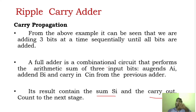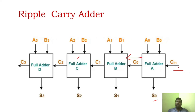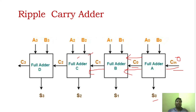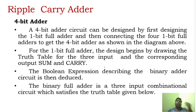This is how the ripple carry adder works. The bits produce the output based upon the input you are giving, and based upon the carry input it produces the carry out — the sum and carry. Only if you give the carry input does it produce the carry output. If the addition produces a carry, it will ripple through to the next bit. Each carry is carried out to the next particular adder. One important thing: this full adder will work only after receiving the carry, whether it is 0 or 1.